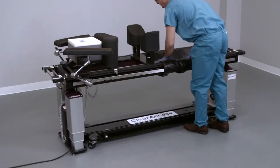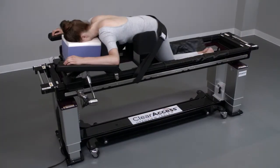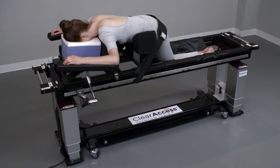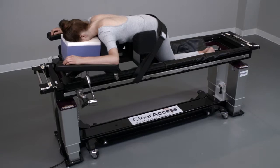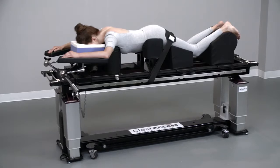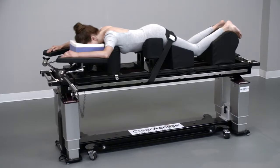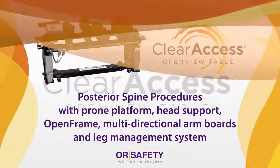Once the patient has been positioned on the table, use patient restraint straps to secure the patient to the table before draping and preparation for surgery. Adjust the open frame and arm boards as necessary for patient comfort and to minimize the risk of pressure marks on the patient. Please consult the ClearAccess instructions for use with any further questions.